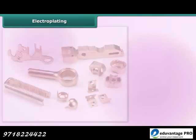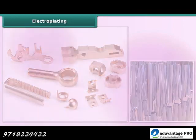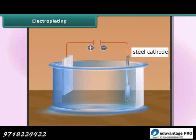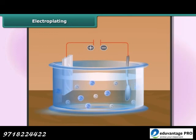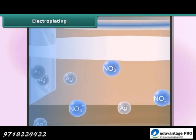Electroplating: It is common practice to coat articles made of cheap metals such as iron or steel with a thin layer of a less reactive metal. A steel object — for example, a spoon — is connected to the negative terminal of the current source. The positive terminal is connected to the bar of the metal, for example pure silver. The electrolyte is a solution of salt that contains the ions of the anode metal, for example silver nitrate.